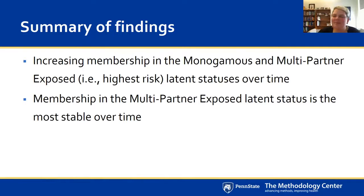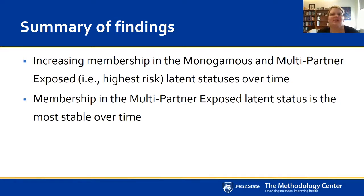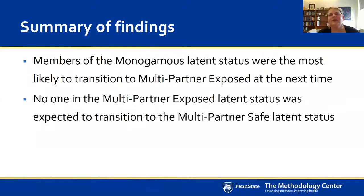These slides will be made available when this talk is archived. To summarize findings: membership in the monogamous and multi-partner exposed latent statuses increases over time. Membership in multi-partner exposed is the most stable. Members of the monogamous latent status were most likely to transition to the high-risk multi-partner exposed status. And unfortunately, no one in the multi-partner exposed latent status was expected to transition into the safer multi-partner safe status.